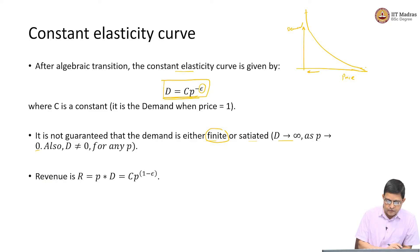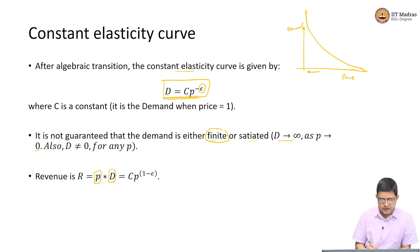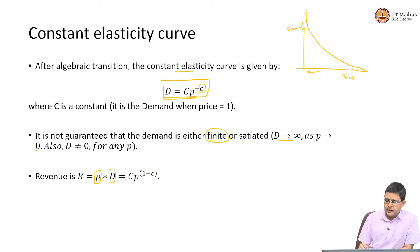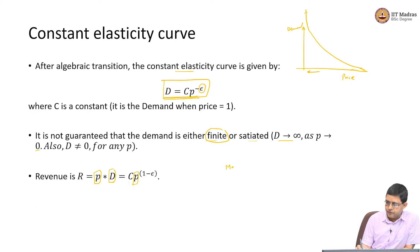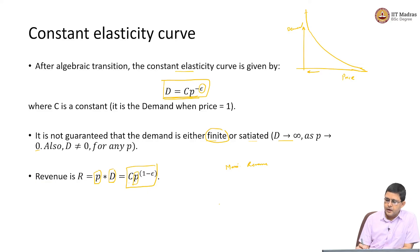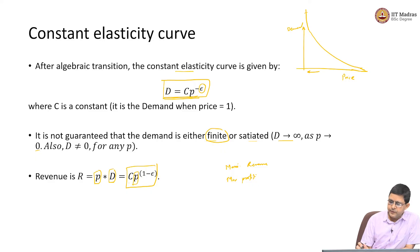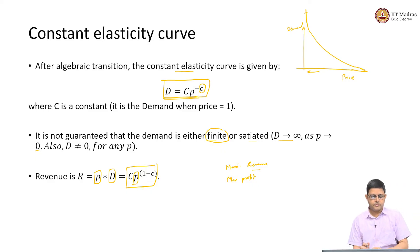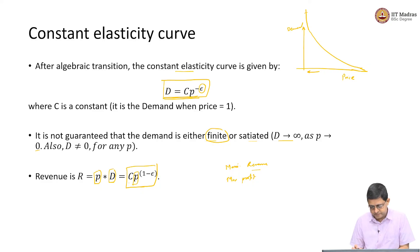Revenue is always given by price multiplied by demand — the total demand for the product multiplied by the price charged for each unit. For the constant elasticity curve, the revenue will be C into P to the power of 1 minus epsilon. The price may be optimized for maximizing the revenue, or we may maximize profit to get an optimal value of price.